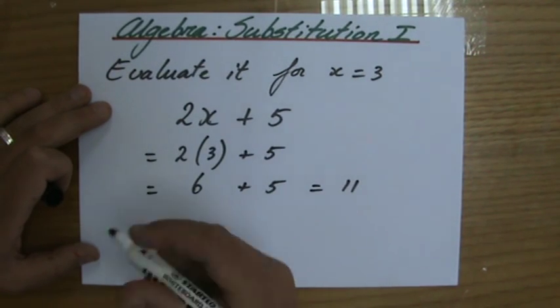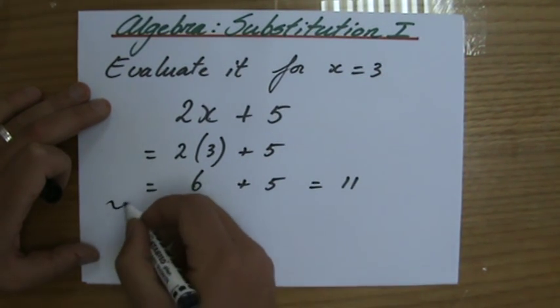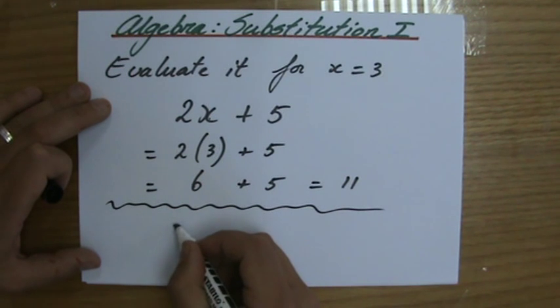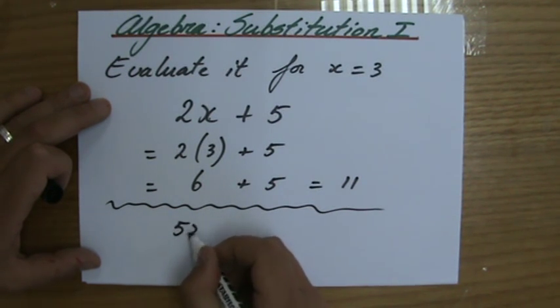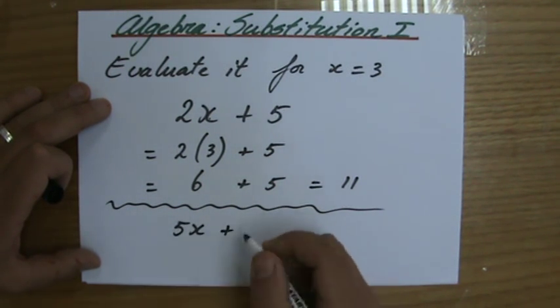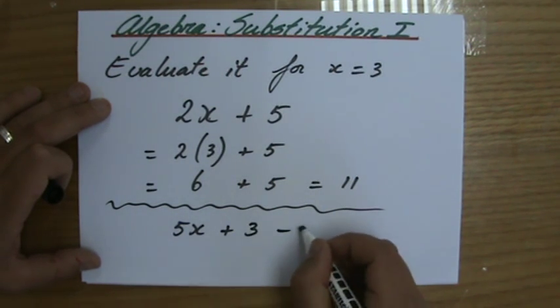Let's do one more here, and then we go to the next video for a little bit harder example. So let's say we have 5x plus 3 minus x.